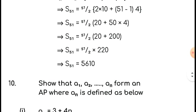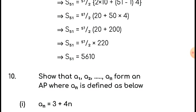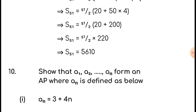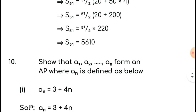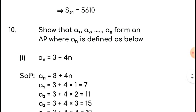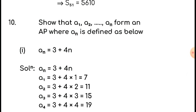Then we come to another problem from the same exercise, question number 10. Given that a_1, a_2, ..., a_n form an AP where a_n is defined as 3 plus 4n. We have to show that they form an AP and then find the sum up to 15 terms.